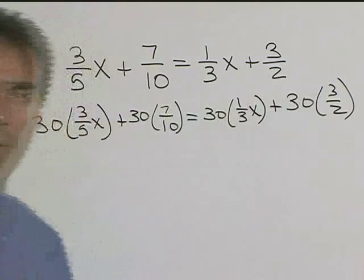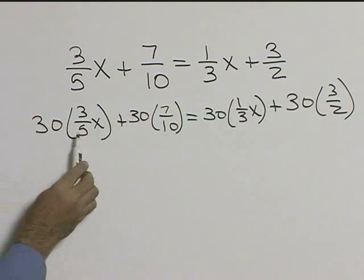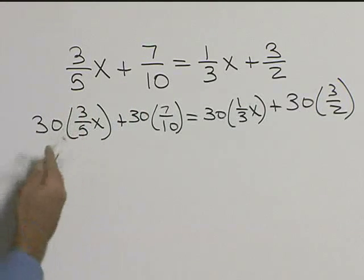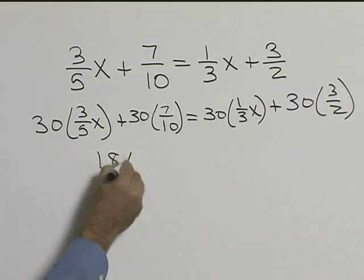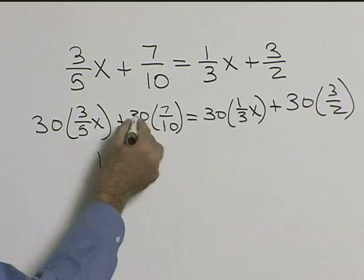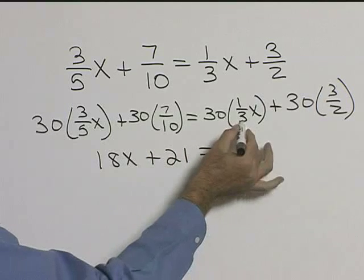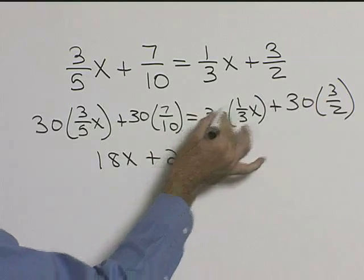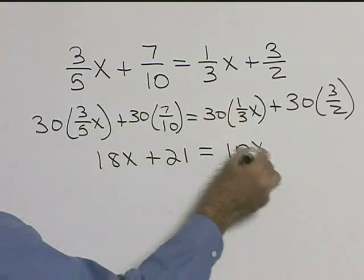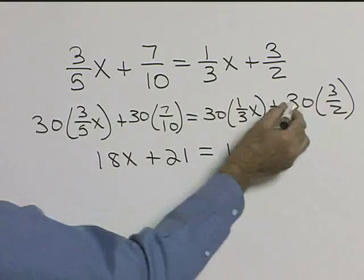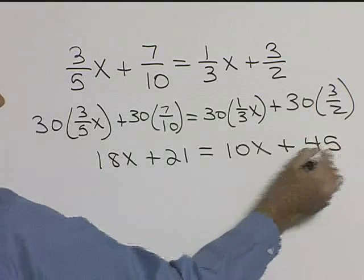Now we're ready to simplify. So 5 goes into 30 six times, times 3 is 18x, plus 10 goes into 30 three times, times 7 is 21, equals 3 goes into 30 ten times, times 1 is 10x, plus 2 goes into 30 fifteen times, times 3 is 45.